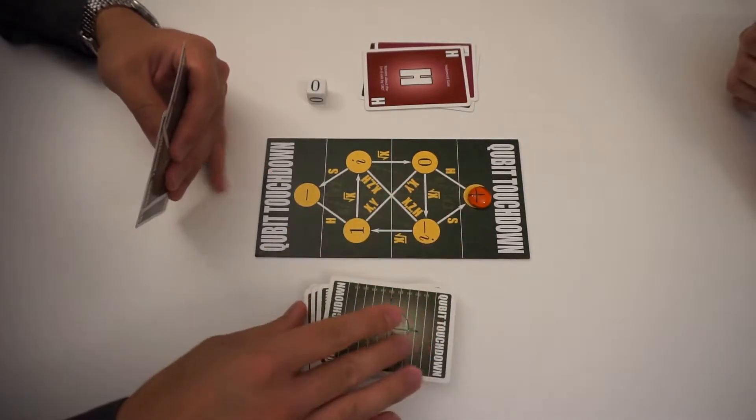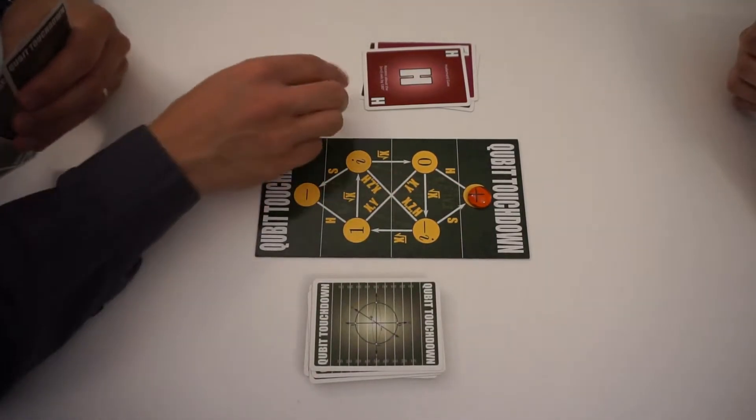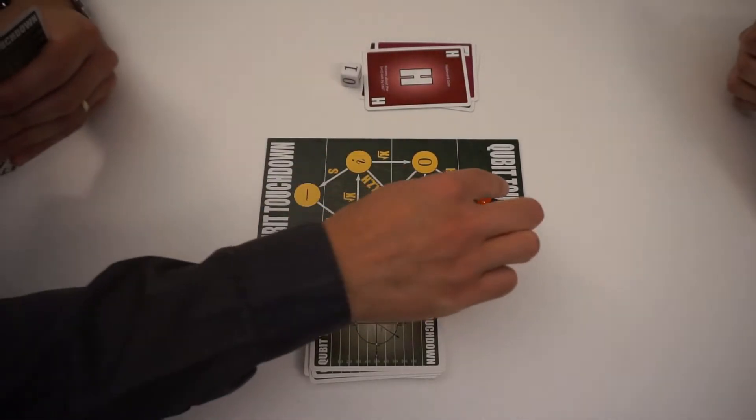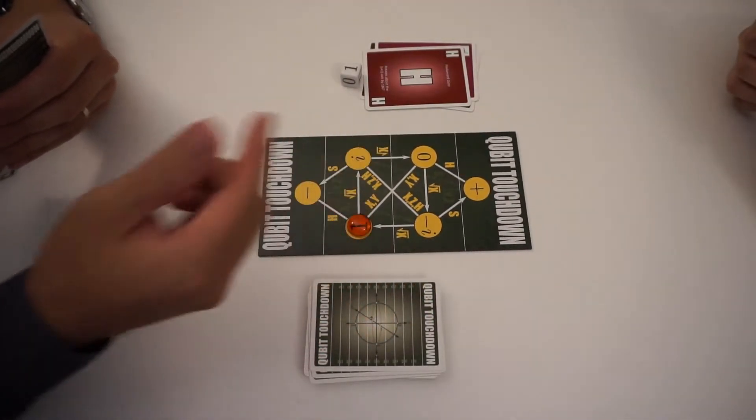I'm going to play an H. So I scored a touchdown. So now the score is one zero and I will kick off by rolling this die. So the ball starts again at one and my opponent begins.